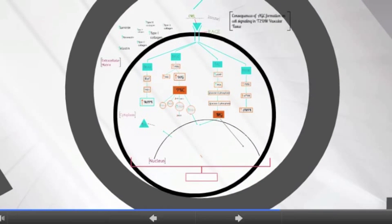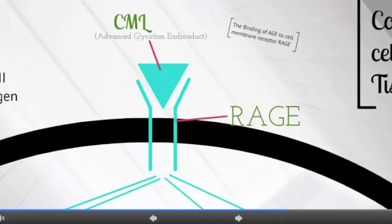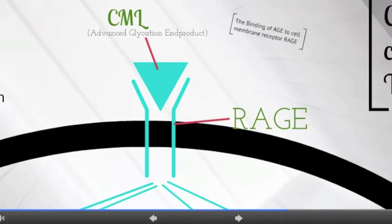Once formed, AGEs may bind to their receptor on the cell membrane, or glycate extracellular proteins. The receptor for AGEs is minimally expressed in normal tissue; however, it is significantly upregulated in cell types that are unable to reduce the rate of glucose transported inside the cell, and in vascular tissue that experiences increased concentrations of reactive oxygen species.